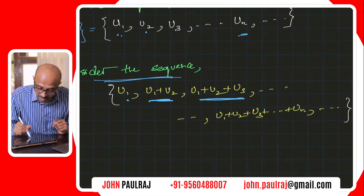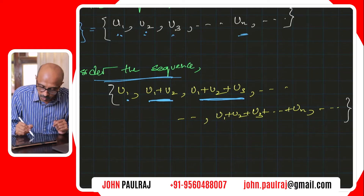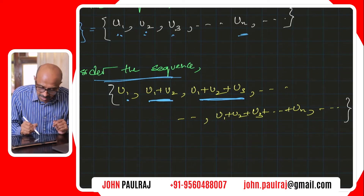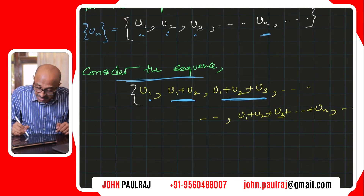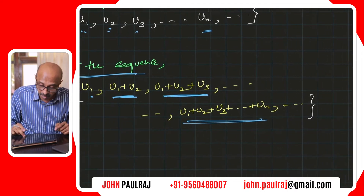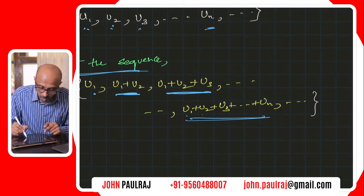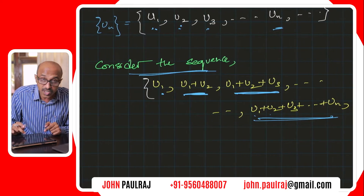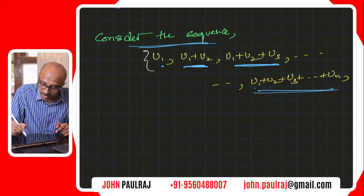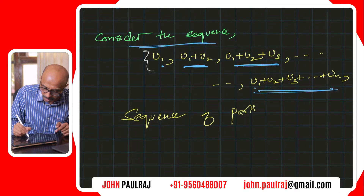The third term — can you see that? It's the sum of the first three terms of the original sequence: U1 plus U2 plus U3. These are also separated by commas, so that's another new sequence. As such, the nth term, the general term of this new sequence, is the sum U1, U2, U3, U4, all the way up to UN — the sum of the first N terms. This new sequence is called the sequence of partial sums.